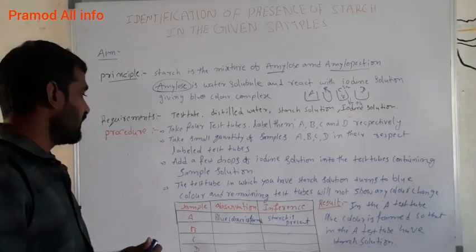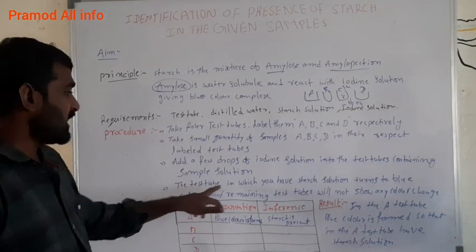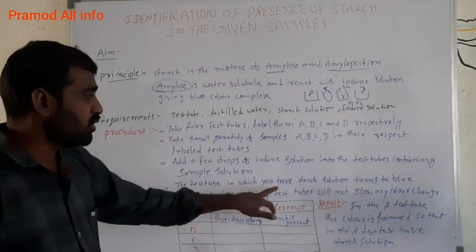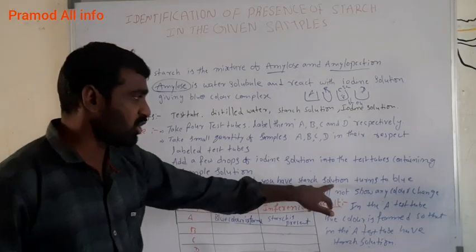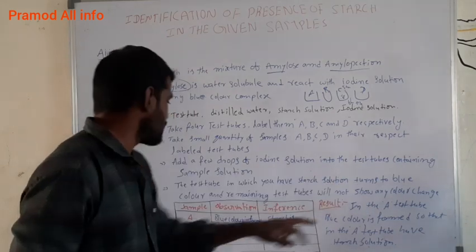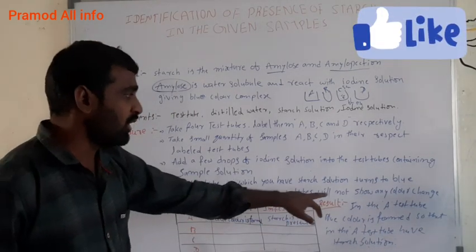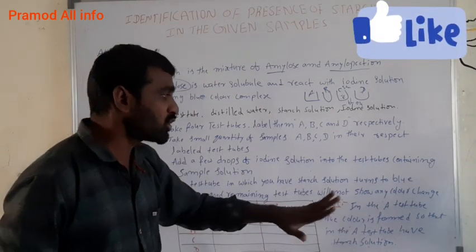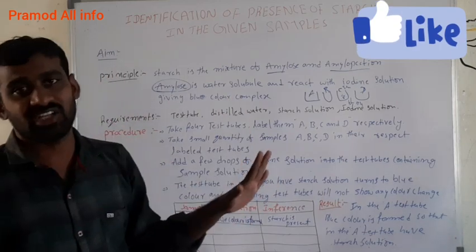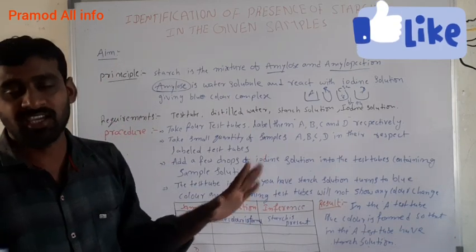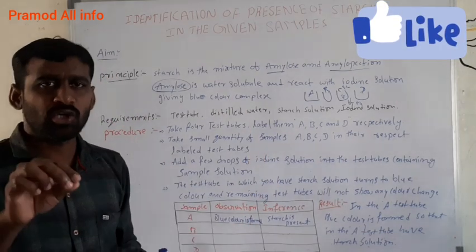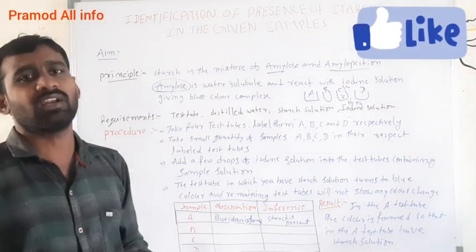The test tube in which starch solution is present will turn blue color. The remaining test tubes will not show any color change.